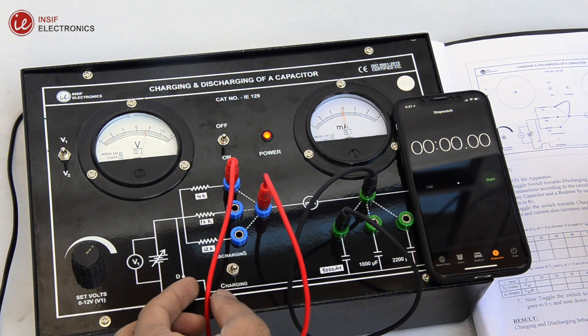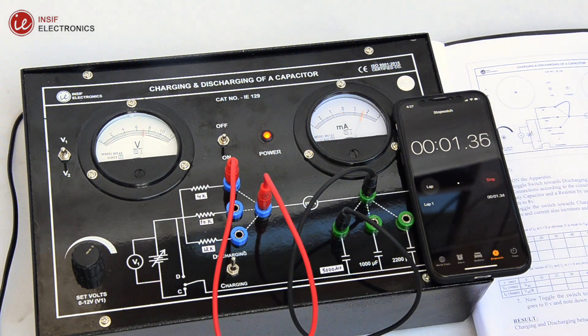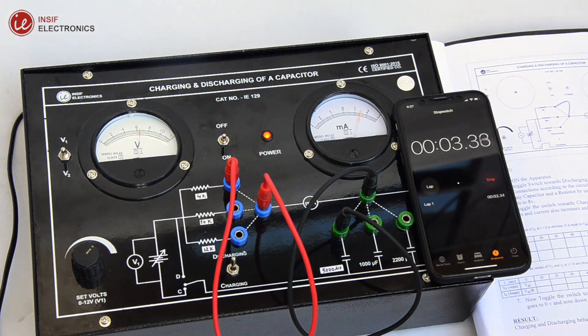Now simultaneously, set the toggle switch towards discharging and start the stopwatch and note down the voltages at 10 seconds, 20 seconds, 30 seconds and so on, till the capacitor is fully discharged.